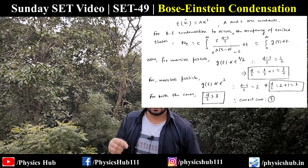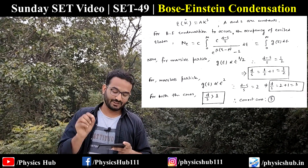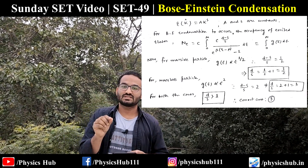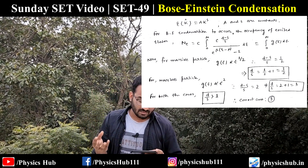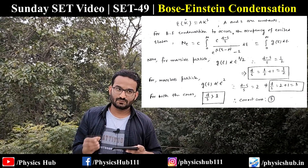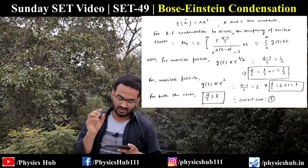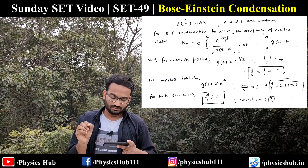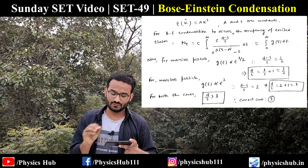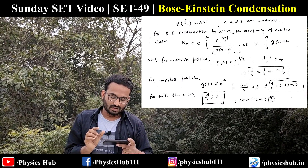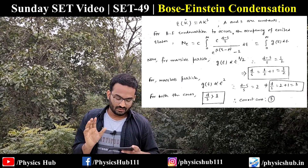The energy dispersion relation is E(k) = a·k^s. For Bose-Einstein condensation, the occupancy of excited states equals ∫₀^∞ g(E) dE / [e^(βE) − 1], where g(E) is the density of states. For massive particles, g(E) ∝ E^(1/2). Comparing both sides, g(E) is analogous to E^((d−s)/s) / [e^(βE−μ) − 1], so the relevant power of E is (d−s)/s.